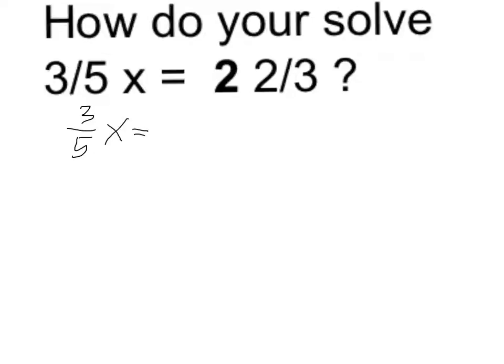Now the way that I convert a mixed number to an improper fraction is I multiply the whole number times the denominator because 2 is equal to 2 times 3 or 6 thirds. So I have 6 thirds plus 2 more thirds, and that's going to be a total of 8 over 3.